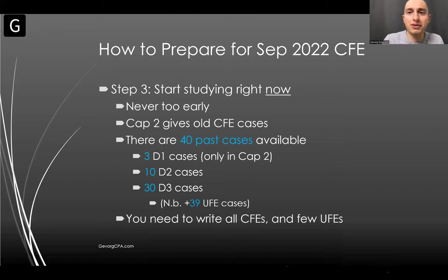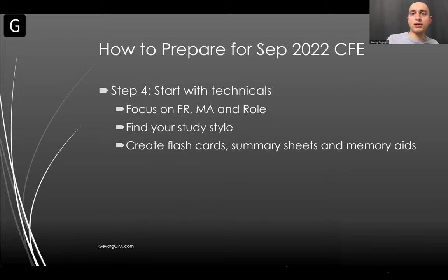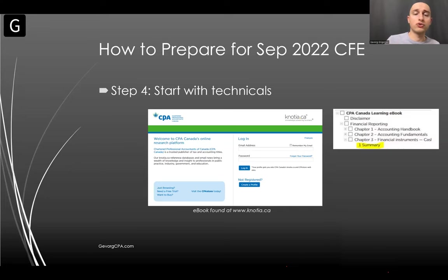Start with technicals — begin technical review in Capstone 1 on weekends and evenings, focusing on FR and MA and your role area, more so on FR. Find your study style: create flashcards, summary notes, memory aids. The CFE ebook is available free to everyone who registers — I recommend clicking the summary chapters for a nice summary of each topic. Capstone 2 will give you flashcards under a flashcards module. You can print them two-sided and quiz yourself — a really great way to prepare. I also released my own technical notes: about 300 pages of concise FR notes covering every standard in the handbook, organized in point form.